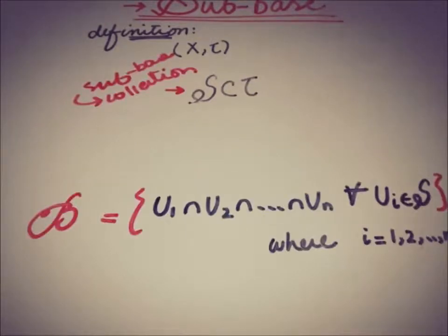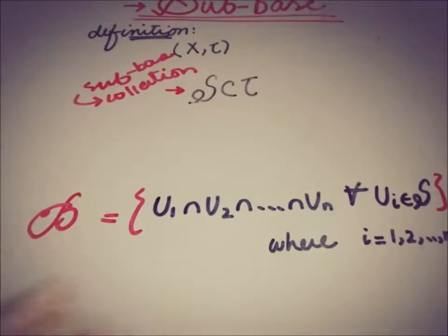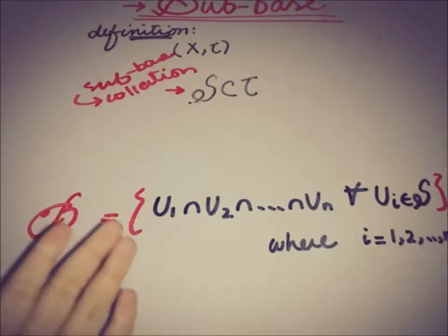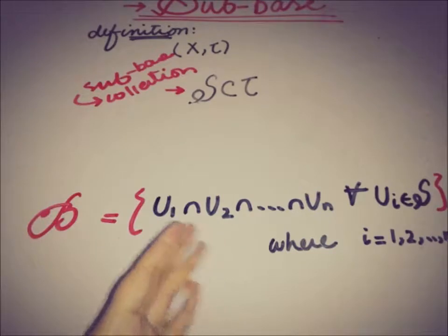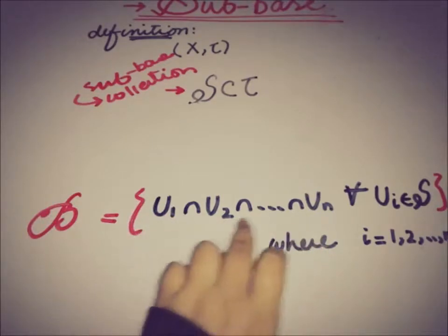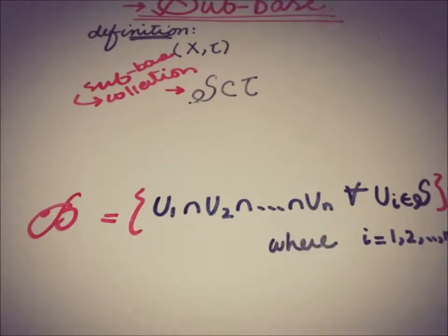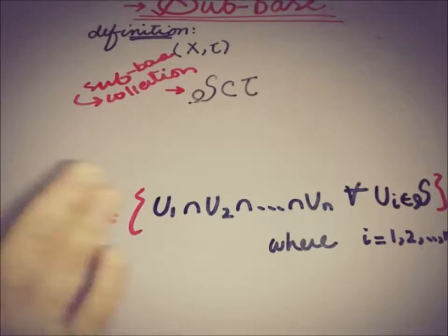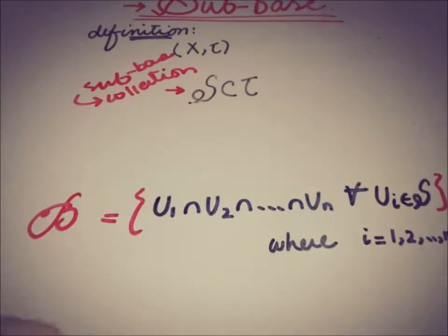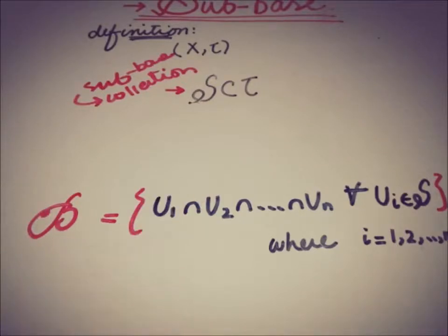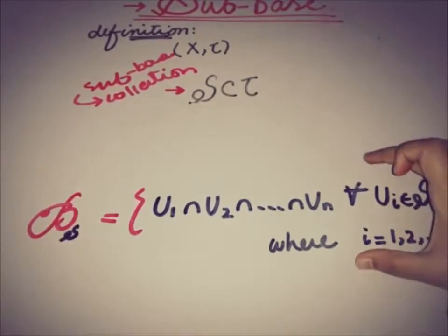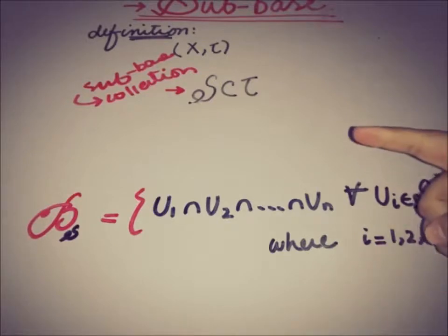That is, we can write this definition in this form: the basis is generated by taking the intersection of finitely many members of that collection S, written as U₁ ∩ U₂ ∩ … ∩ Uₙ. This intersection means we take finitely many members where i varies from 1 to n from that collection S, and then form a basis B. So it is useful to write B as the basis generated by that collection S.